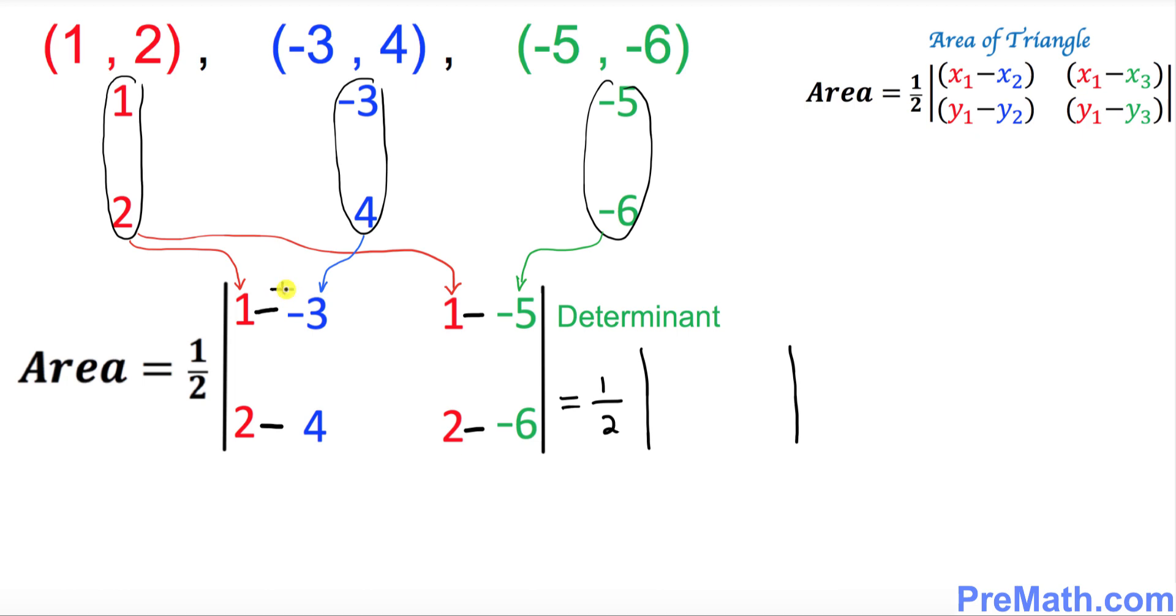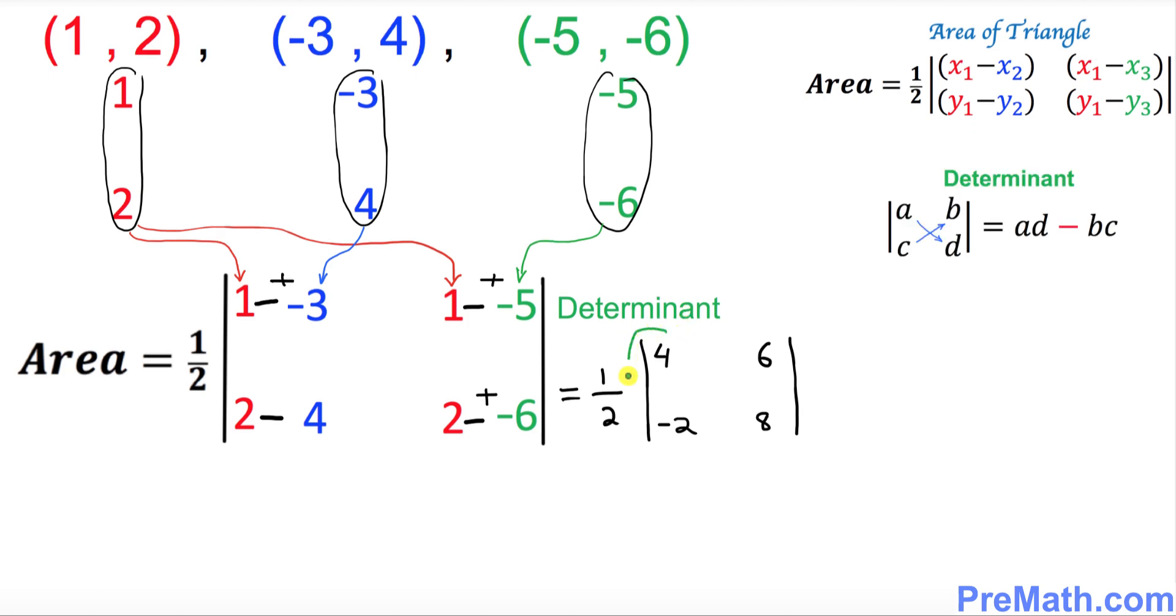So whenever you have a negative and negative next to each other become positive. 1 plus 3 makes 4. And the next step is once again negative and negative become positive, so 1 plus 5 is 6. And then over here 2 minus 4 is negative 2. And once again negative and negative becomes positive, 2 plus 6 is 8.